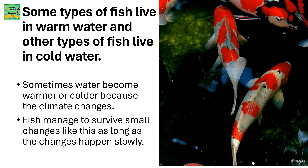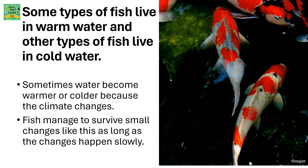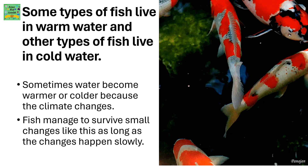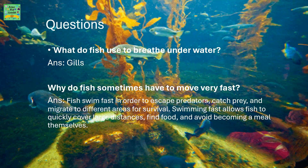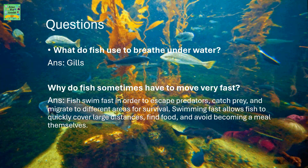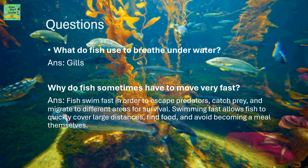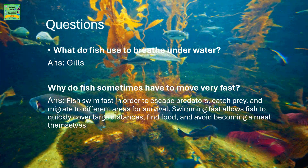Sometimes water becomes warmer or colder because the climate changes. Fish manage to survive small changes like this as long as the changes happen slowly. Fish swim very fast in order to escape predators, catch prey, and migrate to different areas for survival.